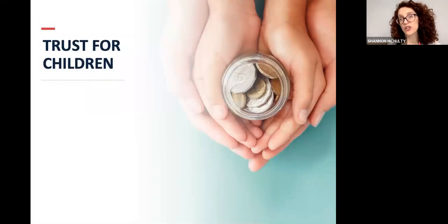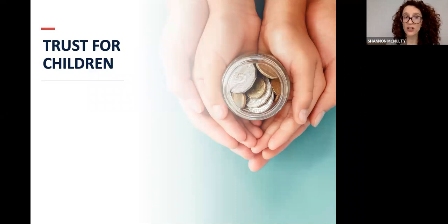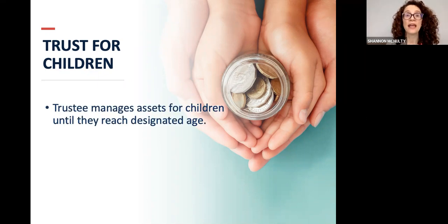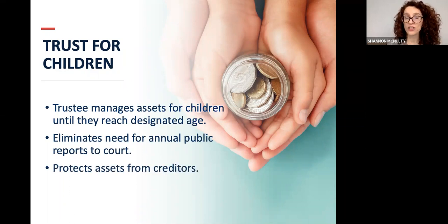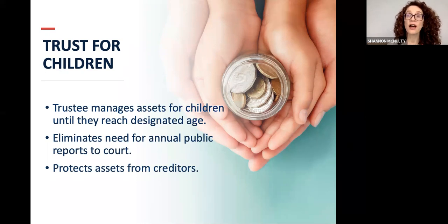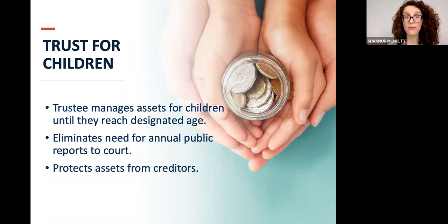The guardian of the assets also cannot be a foreign person. In order to avoid that process entirely, we would set up a trust and leave assets to a trust for the children. The trustee would manage the assets until the children reach a certain age — it eliminates the annual reports to the court, provides protection from creditors, and most parents don't want their kids to inherit a large sum at 18. The trust lets you designate an age when they'd make more mature decisions.